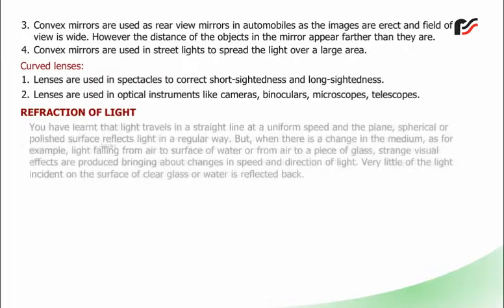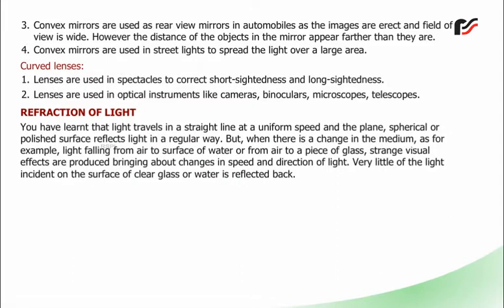Refraction of light: You have learned that light travels in a straight line at a uniform speed, and the plain, spherical, or polished surface reflects light in a regular way. But when there is a change in the medium, as for example light falling from air to the surface of water or from air to a piece of glass, strange visual effects are produced, bringing about changes in speed and direction of light. Very little of the light incident on the surface of clear glass or water is reflected back.